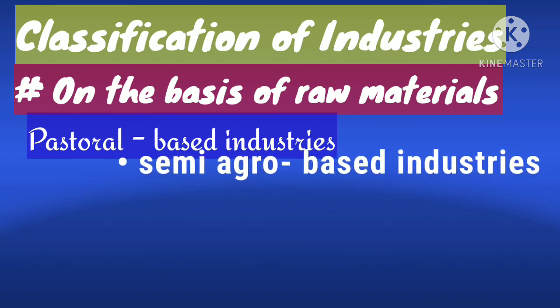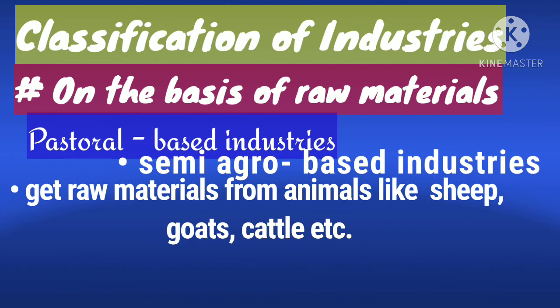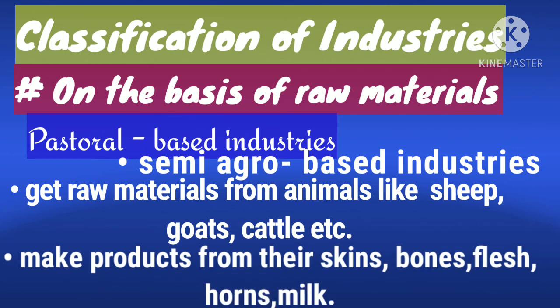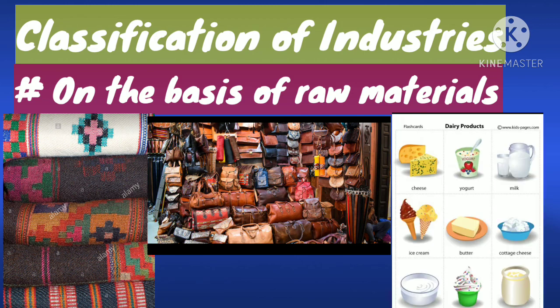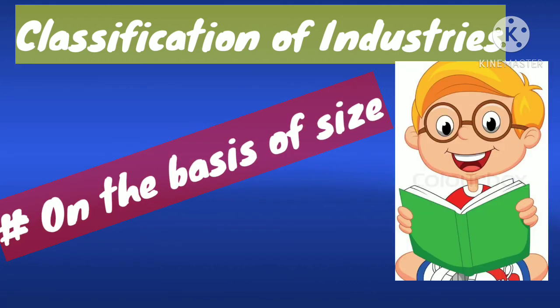The fifth category is pastoral-based industries. These are semi-agro-based industries that get raw materials from animals like sheep. They make different products from skins, bones, flesh, horns, and milk. Some examples of pastoral-based industries are woolen textiles, leather goods, and dairy products.